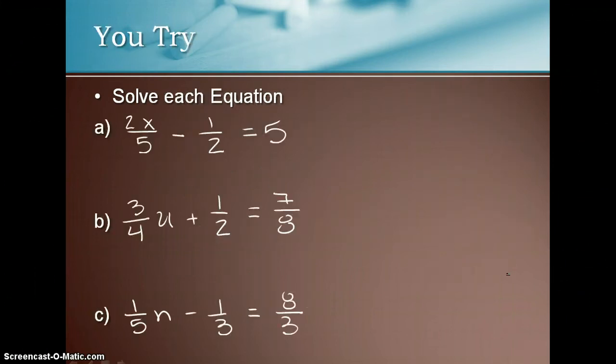Here are your u tries. So 2x divided by 5 minus 1 half is equal to 5. And then 3 fourths u plus 1 half is equal to 7 eighths. And 1 fifth n minus 1 third is equal to 8 thirds.